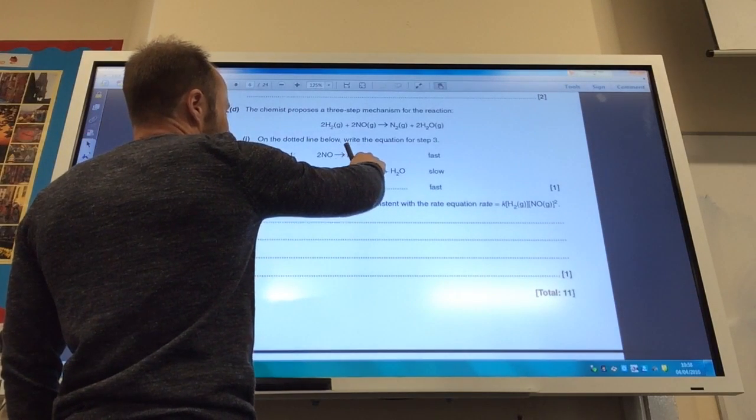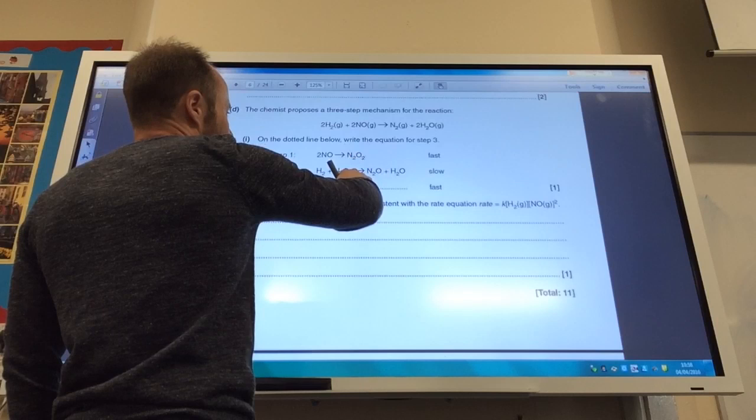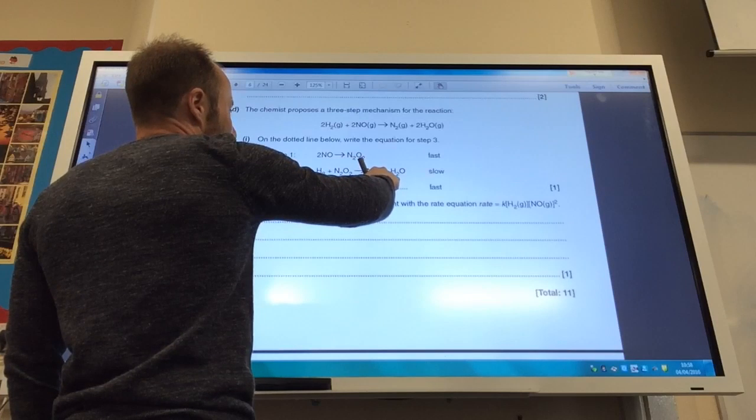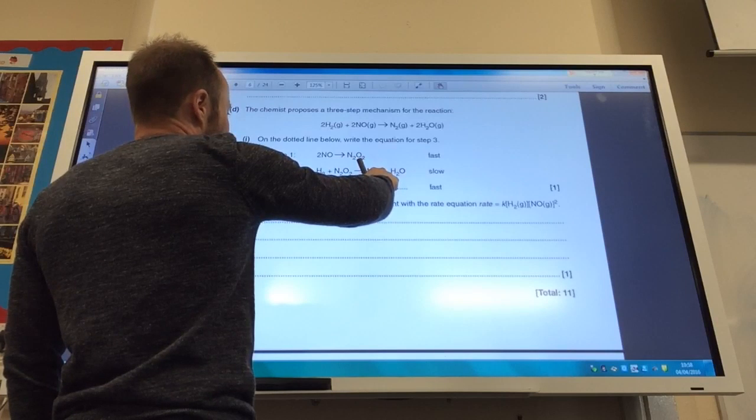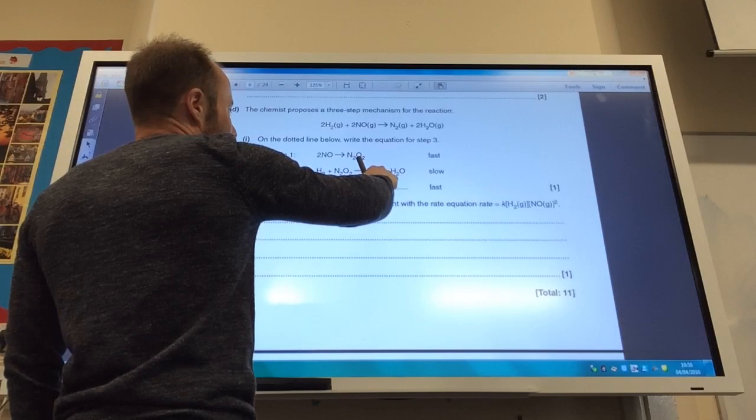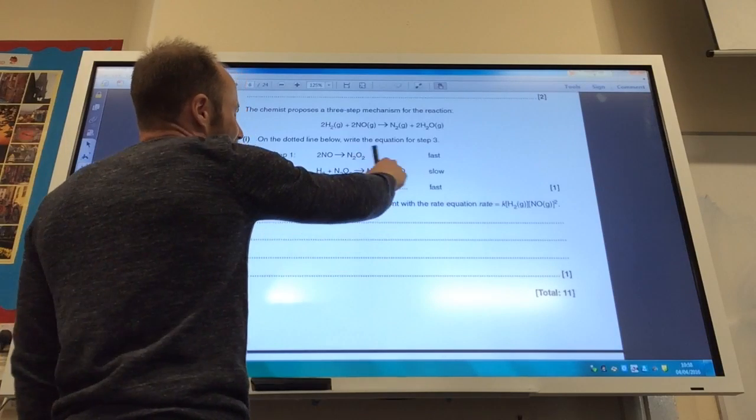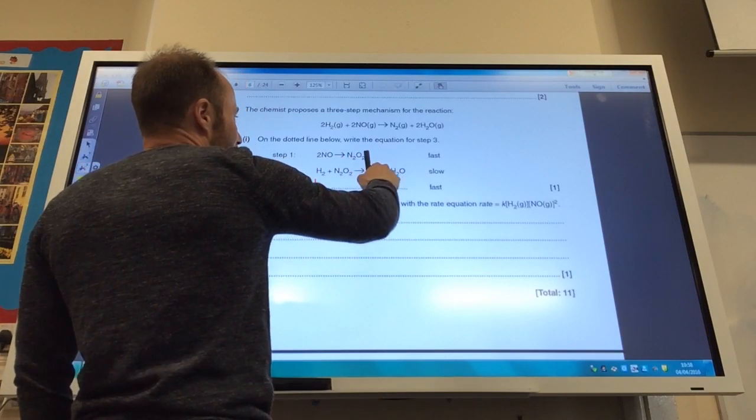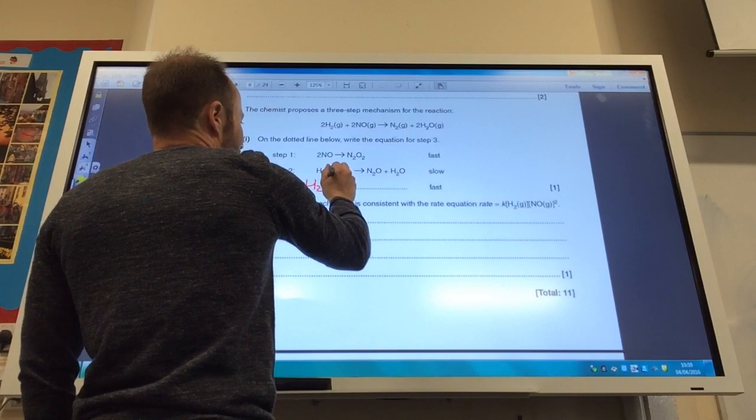So I've got to have H2, that's okay, that gets removed. I make N2O2 there, but it uses there. I make N2O there. So I've got to get rid of that N2O there, haven't I? Because I've formed it, but it doesn't form as part of the reaction.